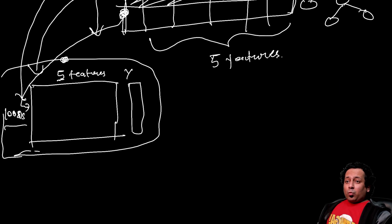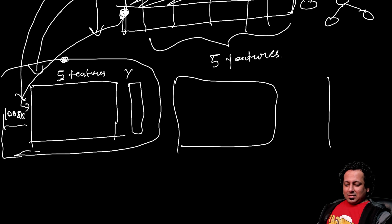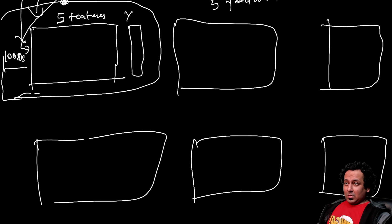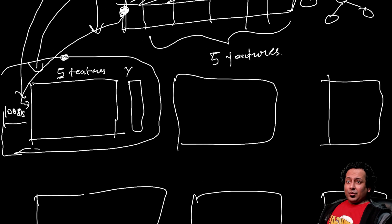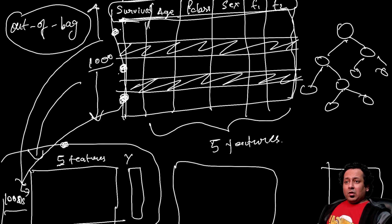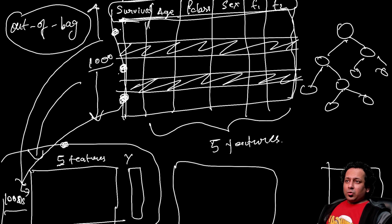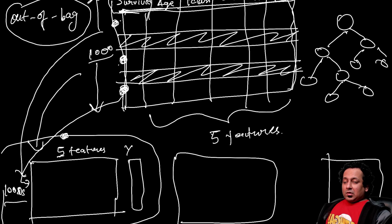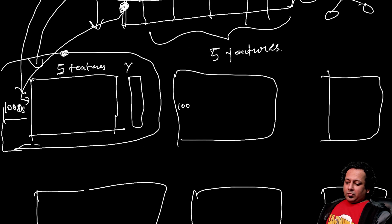You don't create just one dataset like this — you create multiple datasets. Each has a lot of out-of-bag samples from the original. The key thing to remember: you select one sample at a time, samples can repeat, and every subsampled dataset has 1000 samples just like the original.